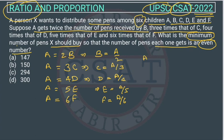Now, what is the ratio of A, B, C, D, E, and F? So A is A, B is equal to A by 2, C is A by 3, D is A by 4, E is A by 5, and F is A by 6.